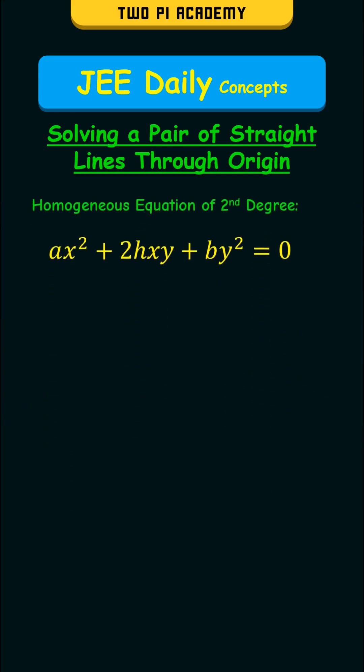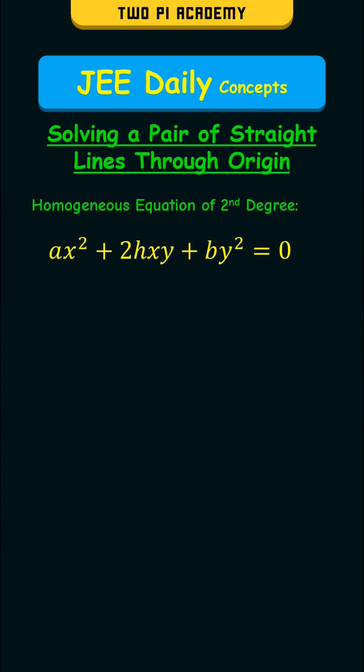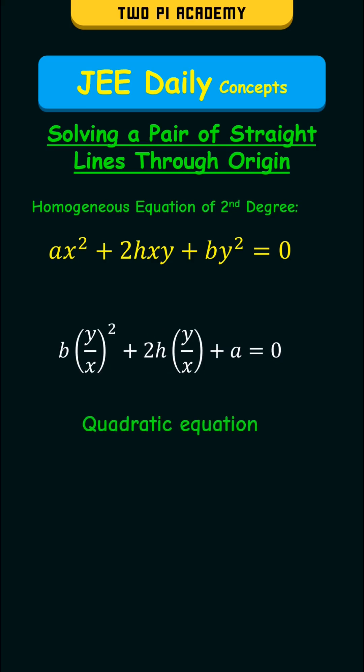Now from this suppose you need to find the equations of the individual lines. To do that we first divide the equation by x² on both sides and rearrange the terms to get the following equation which is a quadratic equation in y/x.